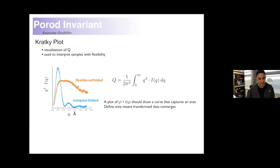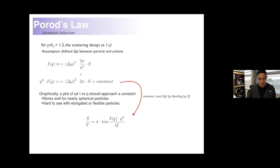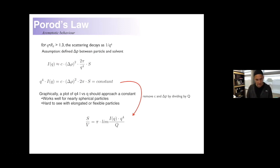For the compact folded protein glucose isomerase, if we plot q²·I(q) it captures a defined area under the curve — we call that compact. If the system is flexible and unfolded, that same plot shows a plateau and slow convergence to baseline. This is the basis for using SAXS to understand whether a polymer or protein is flexible or compact. Porod also predicted that plotting q⁴·I(q) should approach a constant value for a compact particle.